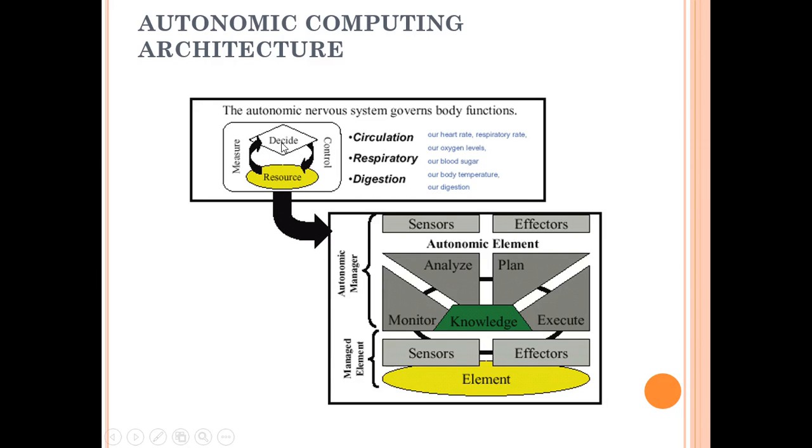This is the autonomic manager. These are managed elements managed by the autonomic manager, and there are sensors and effectors. The manager analyzes, plans, executes, and monitors. In between, there is knowledge. These sensors and effectors, the sensors and effectors are there and this process is going on.